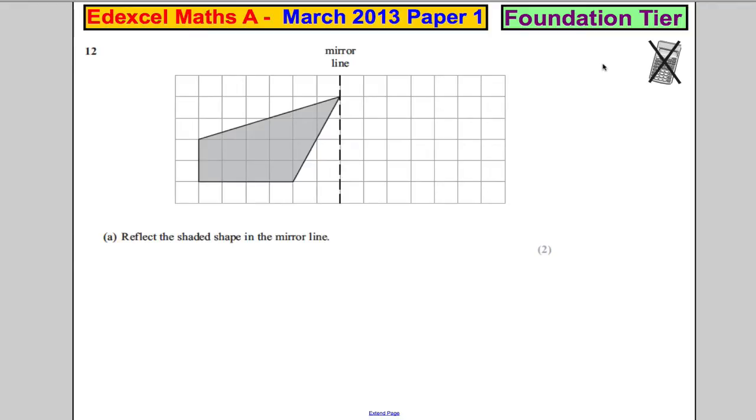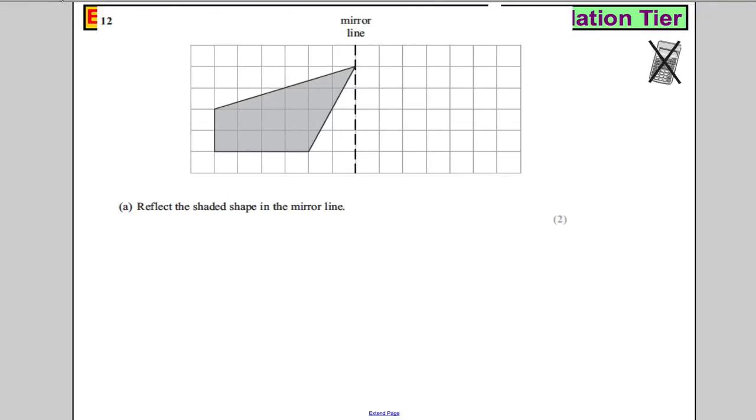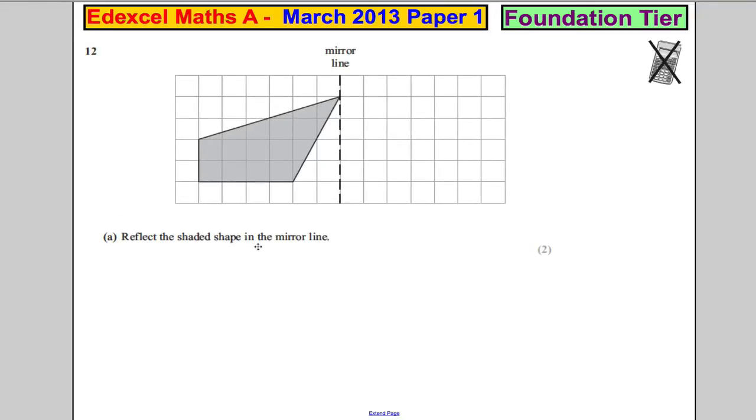Question 12: You've got a four-sided shape, a quadrilateral, and you're asked to reflect the shape in the mirror line. All you've got to do is copy this shape over here.